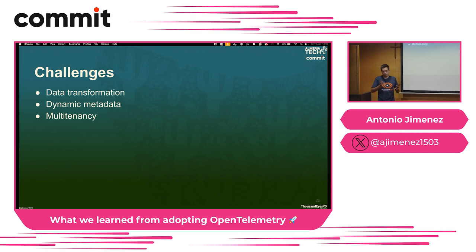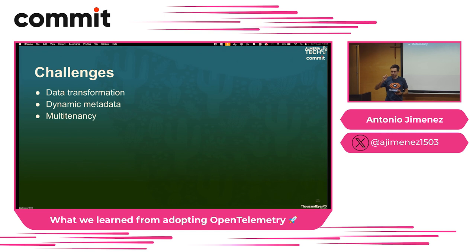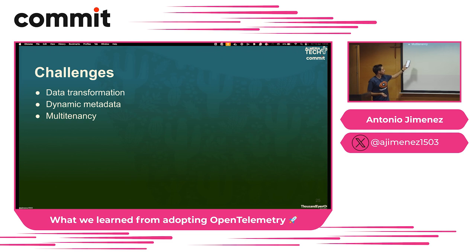Multi-tenancy: ideally we would have a pipeline per customer, but in terms of cost that is not possible. So we are going to have a pipeline with all our customer data and we need to make sure the data we are sending goes to the specific customer — not to other ones. You might think, why is this important? Remember, those agents can run inside customer infrastructure which might expose internal IPs of the customer, and they don't want that to happen. Health and liveliness: we need to know when the pod is ready to let Kubernetes know that the pod is initialized, terminated, or scaling.